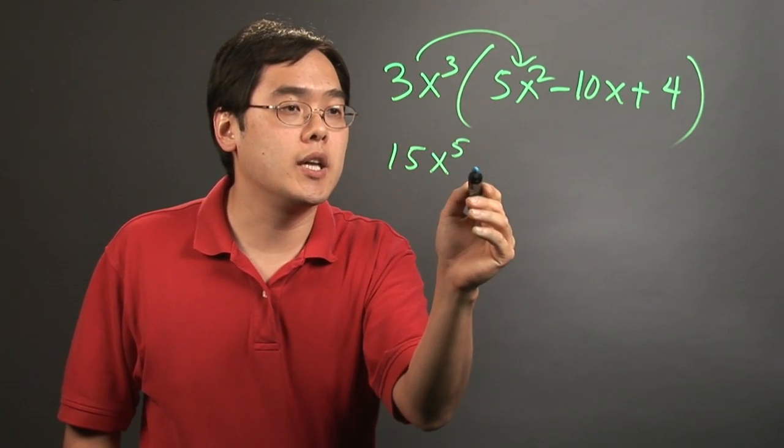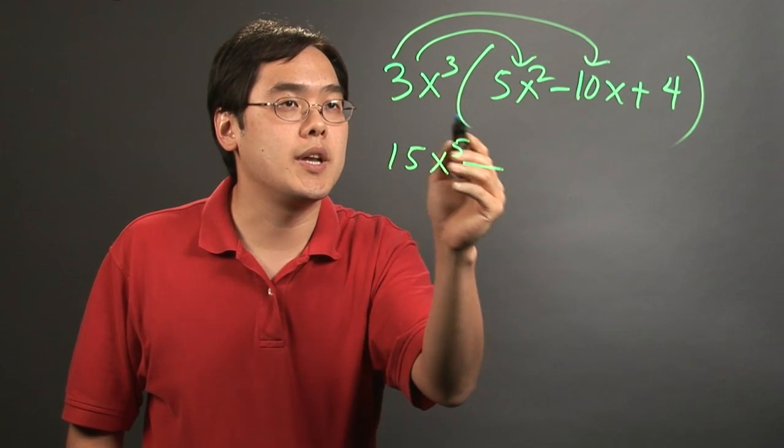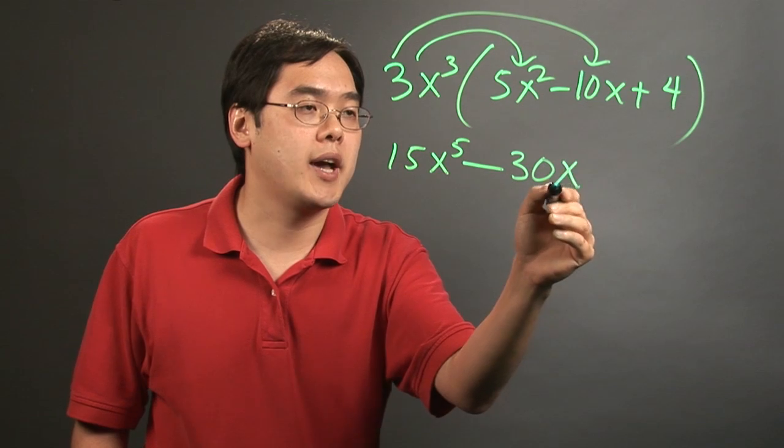Now, positive times a negative, that's going to give you negative. And so 3x cubed times 10x, 3 times 10, that's going to give you 30. And then x cubed times x is going to be x to the fourth.